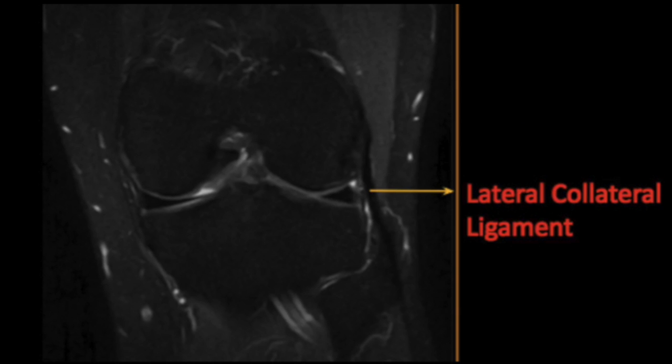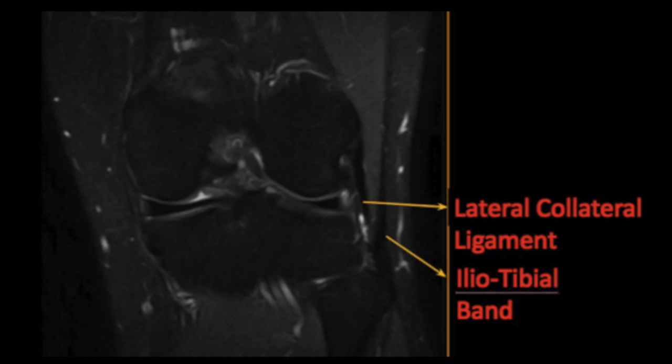Then we come to the lateral collateral ligament, which is usually not seen in one single plane. In cases of a redundant lateral collateral ligament where some pathology is suspected, we may see it in one single plane.